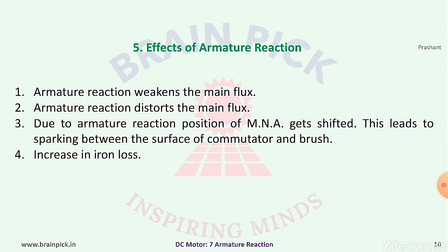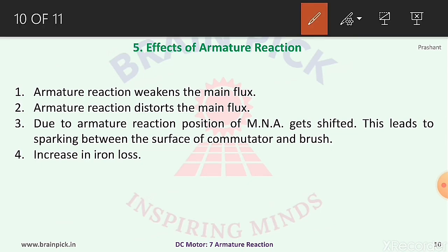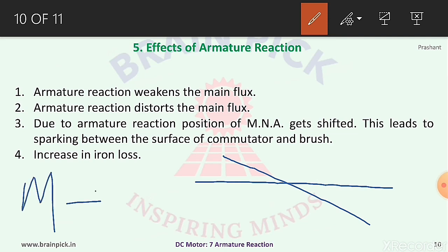The third effect: due to armature reaction, the position of the magnetic neutral axis gets shifted, and this leads to sparking between the surface of the commutator and brush. The MNA shifts from its main position. In a motor, the MNA shifts in the opposite direction to rotation; in a generator, it shifts in the direction of rotation. The fourth effect: armature reaction increases iron loss in the DC machine.